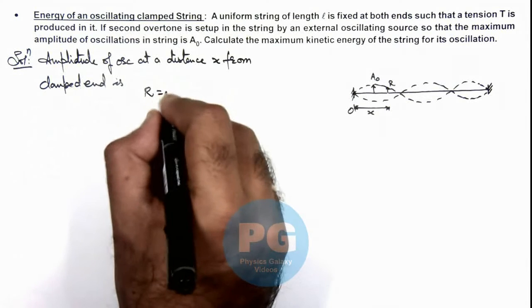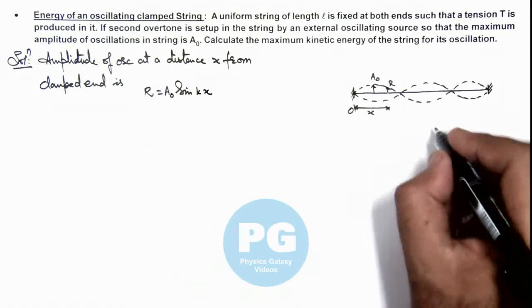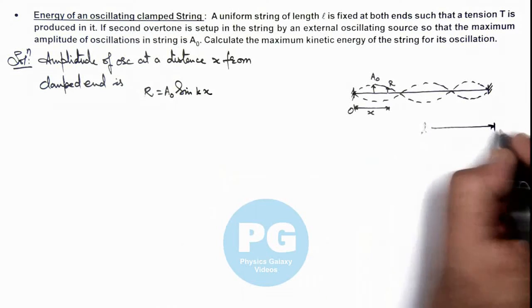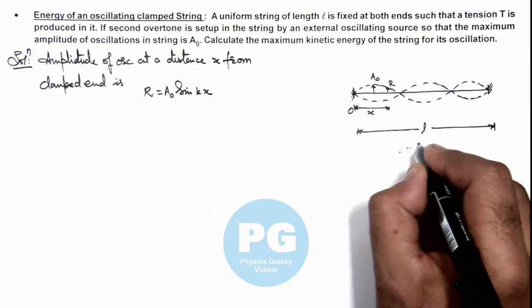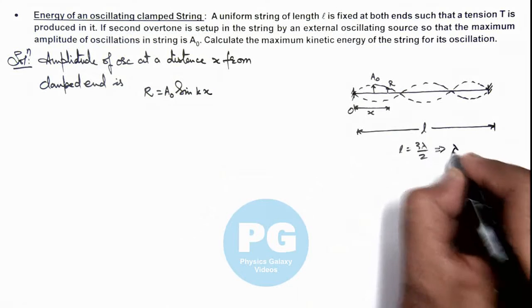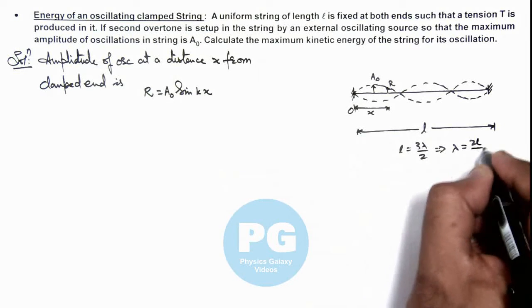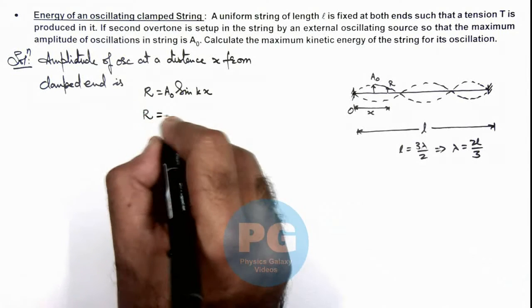and we write it as A₀ sin(kx). And in this situation as the length of string is l, here we can use l = 3λ/2 for third harmonic oscillation which gives us the value of lambda which is 2l/3. So in this situation the value of R we are getting is A₀ sin of